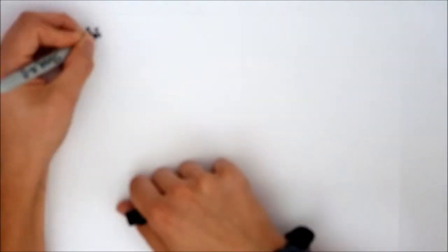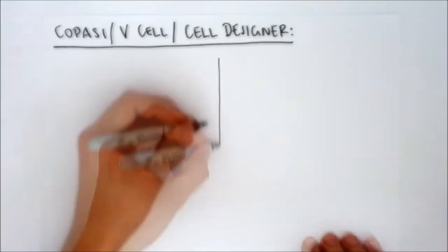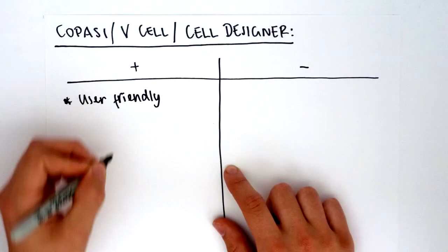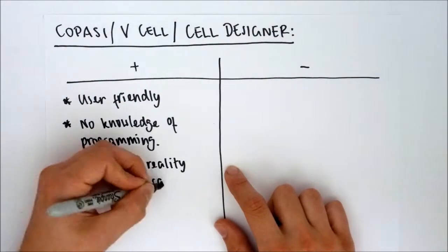There are a few programs available most frequently used by undergraduates. Programs such as Copasi, V-Cell and Cell Designer are very user friendly. They require no prior knowledge of computer programming and they accurately mirror biology.